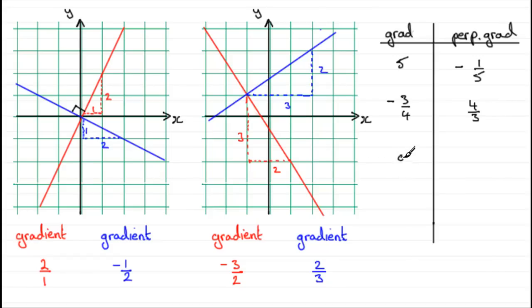So in general, if I've got a gradient of a over b, the perpendicular gradient would be minus b over a. Or if I had a line with a gradient of m1 and the perpendicular gradient was m2, what do I notice about the connection between these gradients? Well, if I multiply them together, two over one times minus a half, I get minus one. And the same implies here. Minus three over two times two thirds comes out to be minus one.